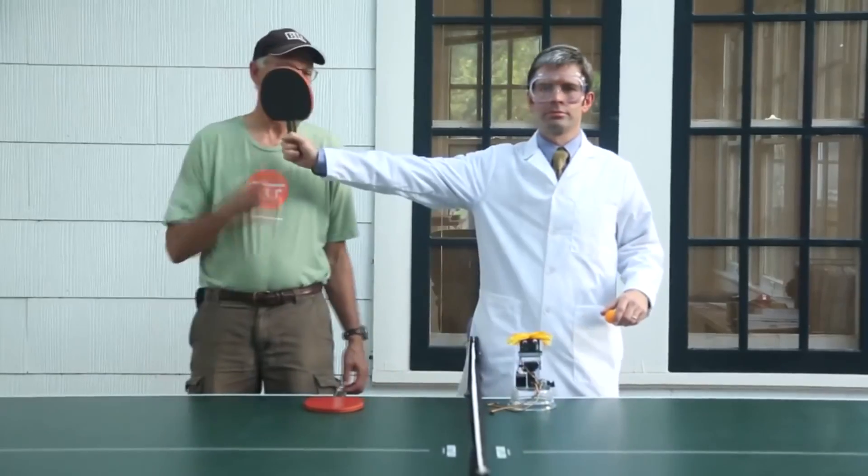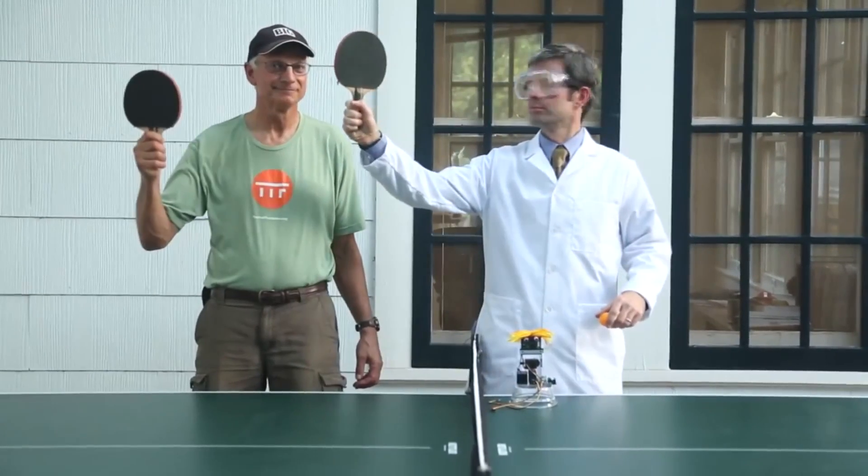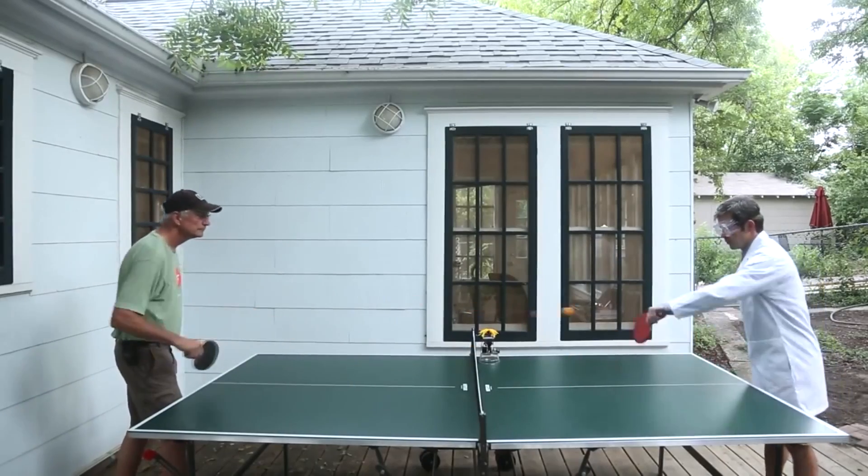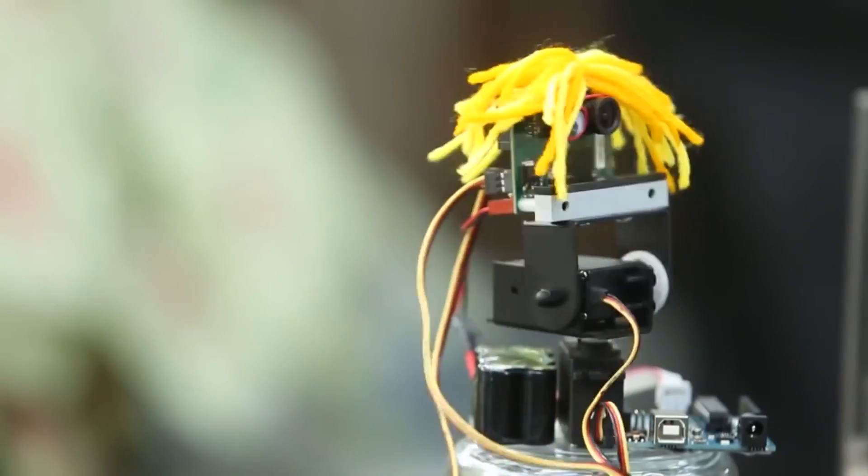Many sensing tasks require speed. Pixie is fast, finding objects and providing updates 50 times per second. Pixie is fast, so your robot can be fast too.